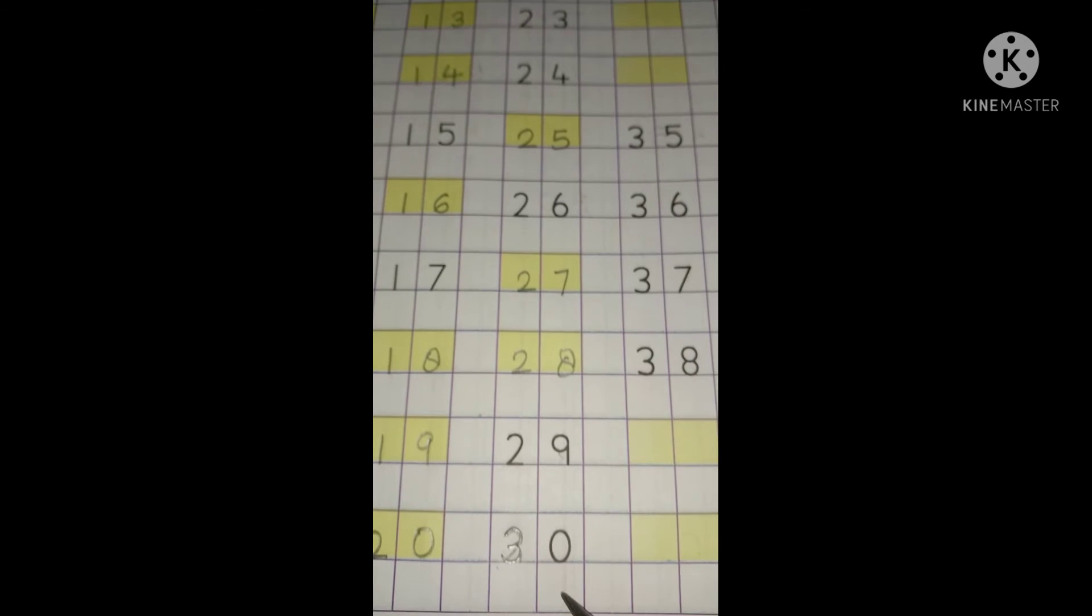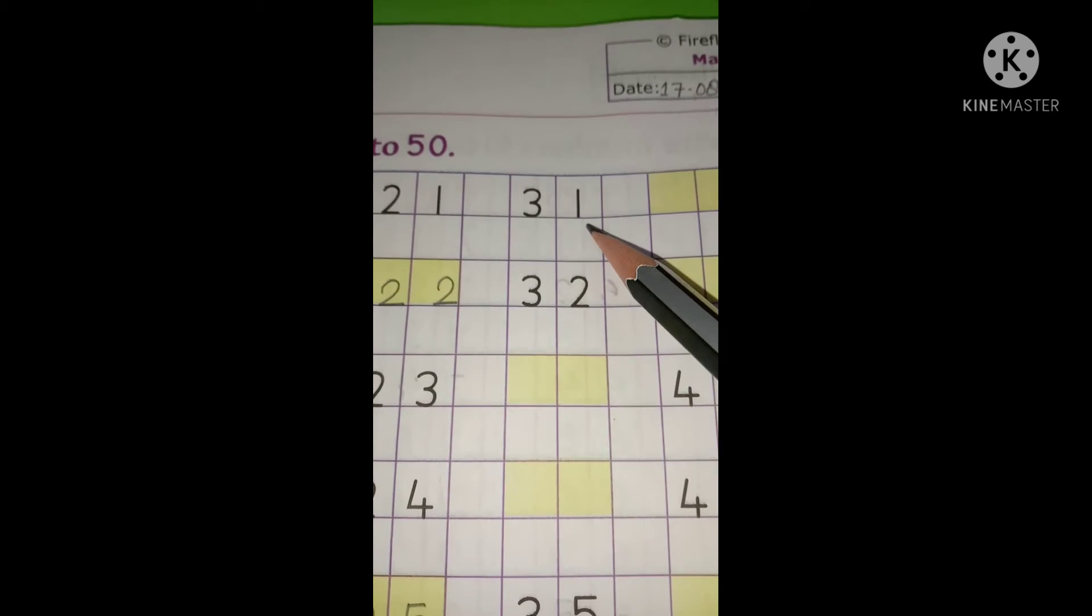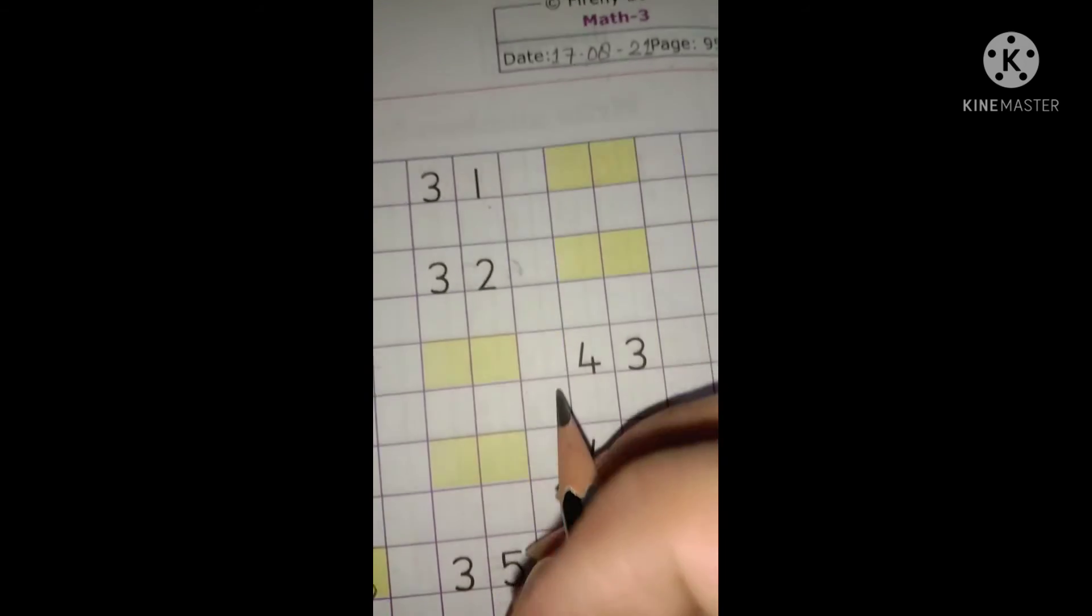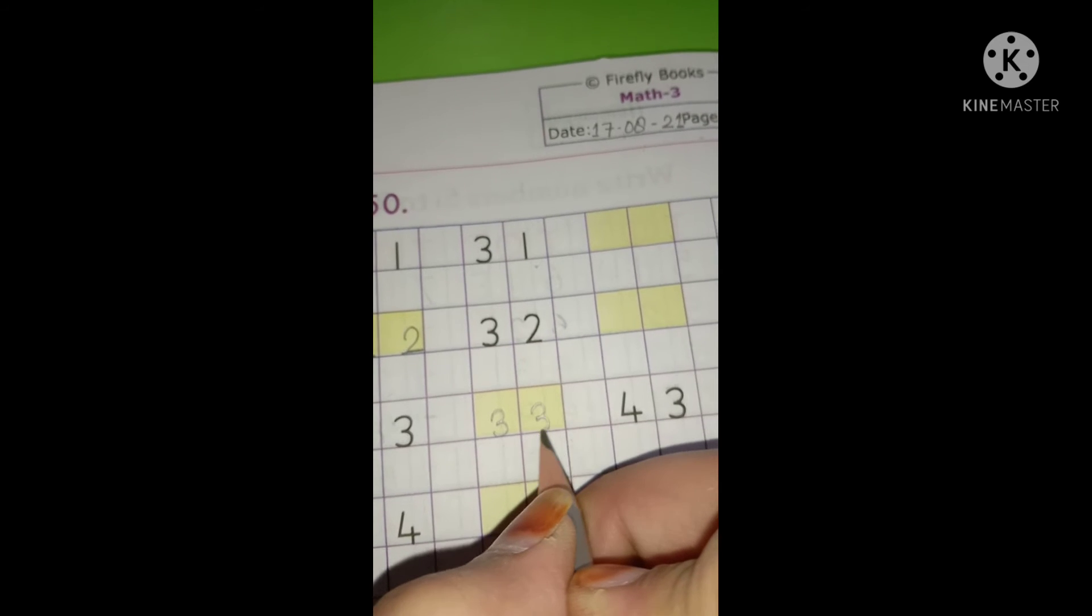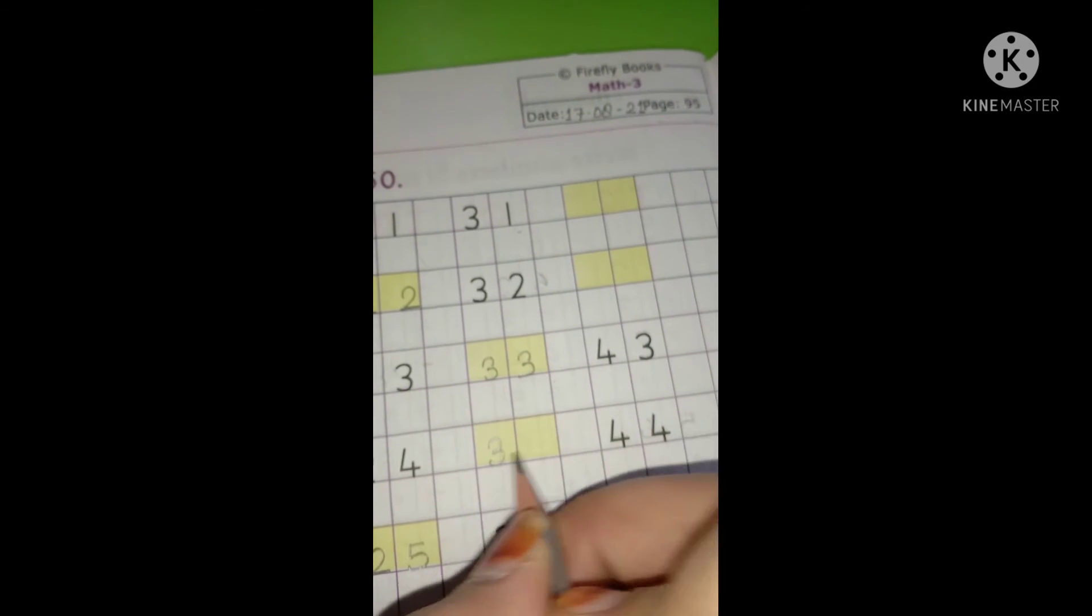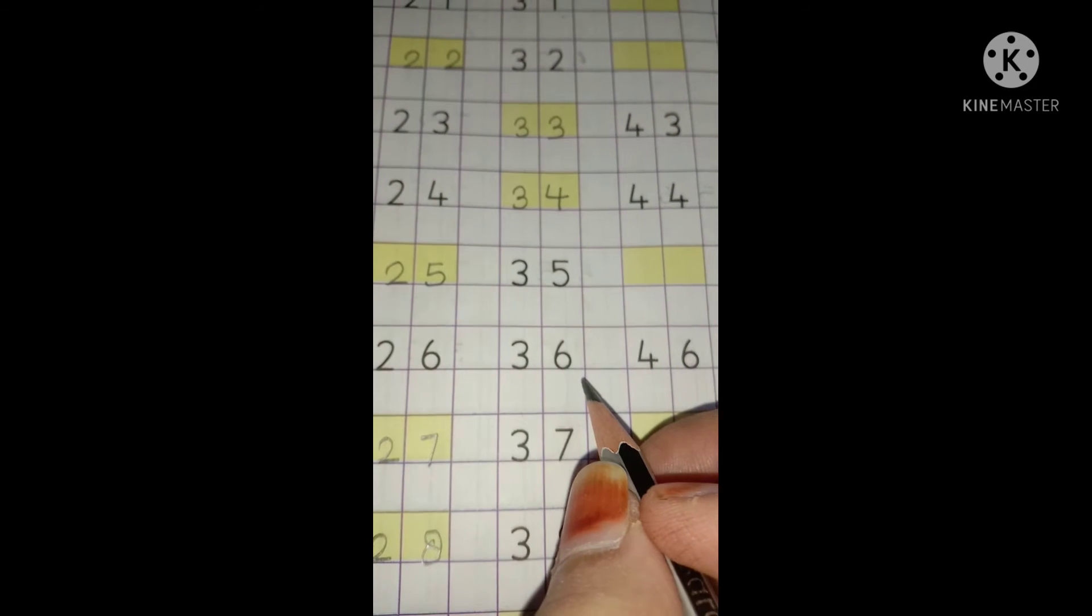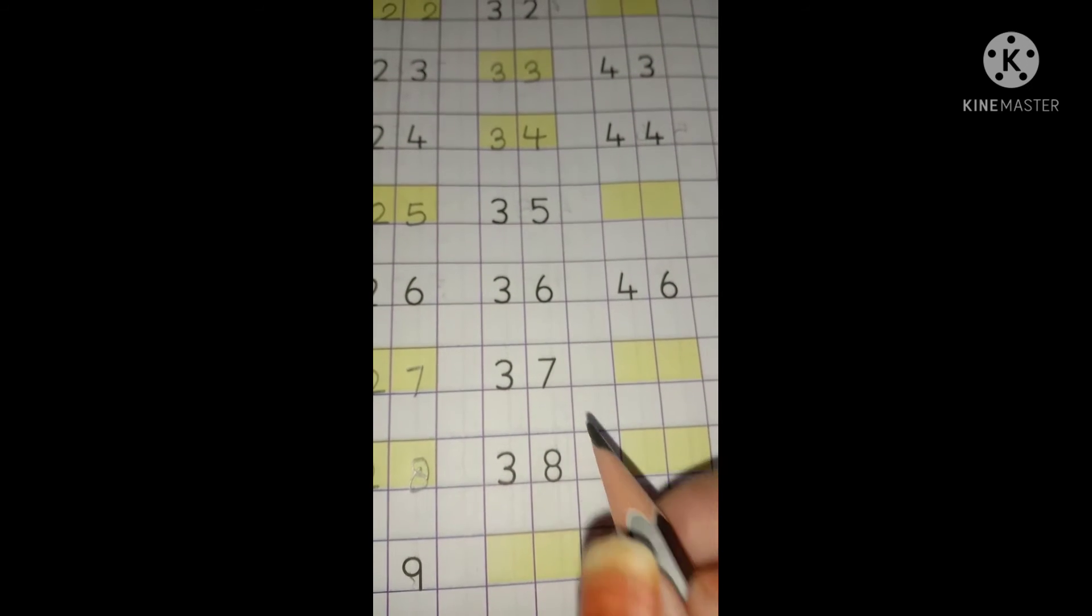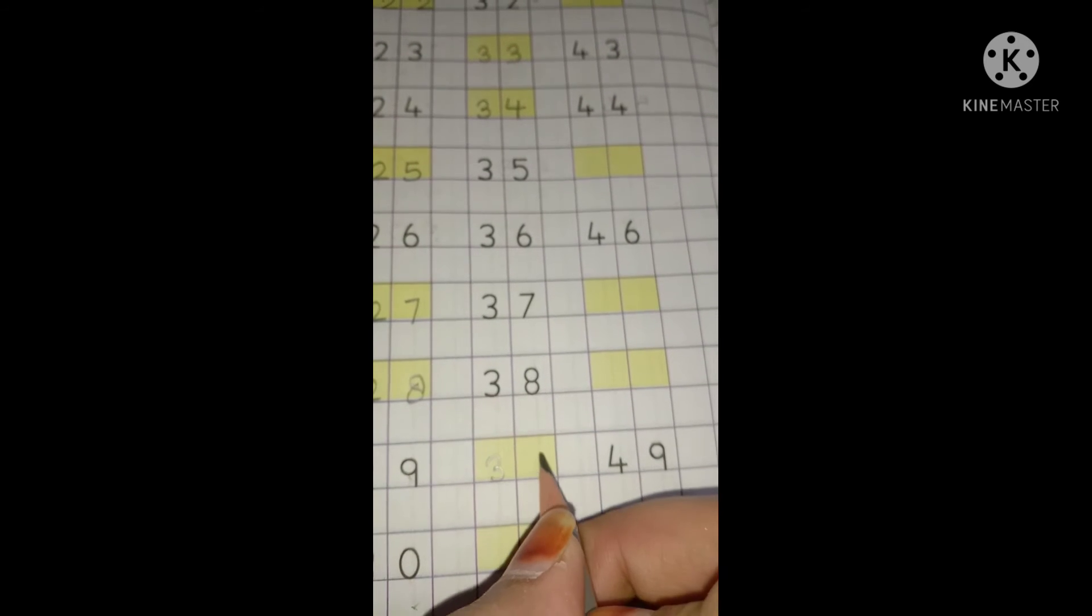31, then 32. Now what comes after 32? It's number 33, very good. Then 34, 35, 36, 37, 38. Now what comes after 38? It's number 39.